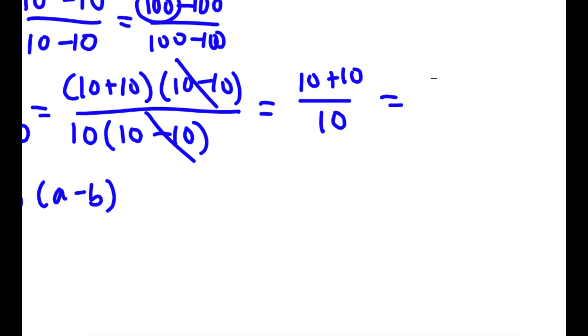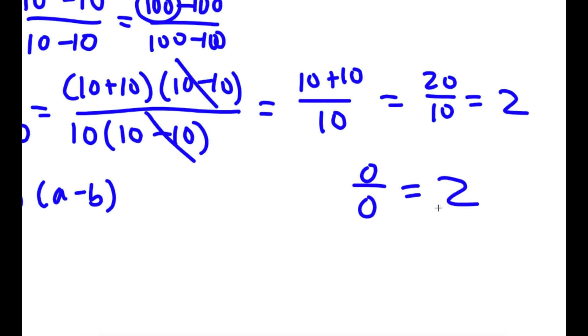Now I can go ahead and cancel these two (10 minus 10) factors. I'm left with 10 plus 10 over 10. Since 10 plus 10 is 20, I have 20 over 10, which equals 2. So I just proved that 0 over 0 is equal to 2.